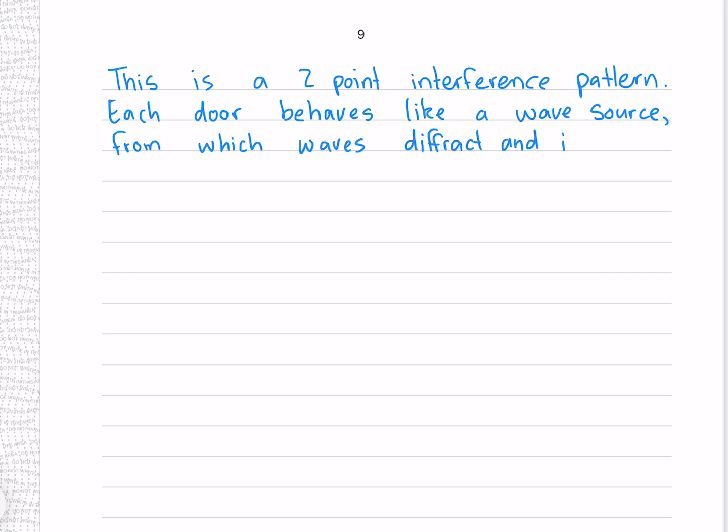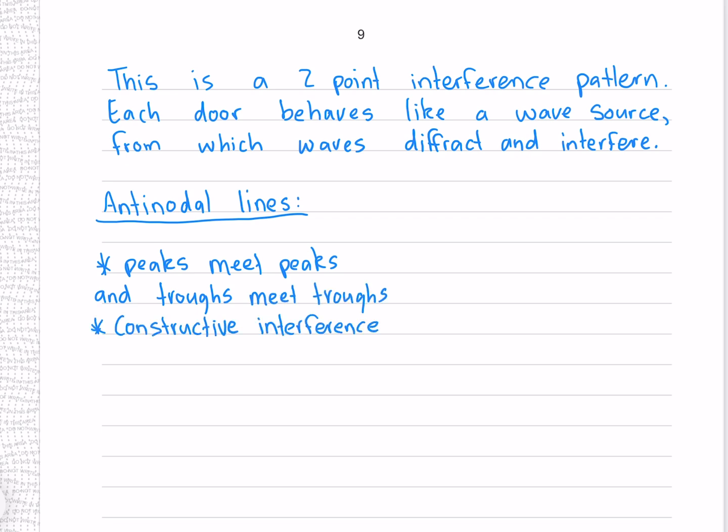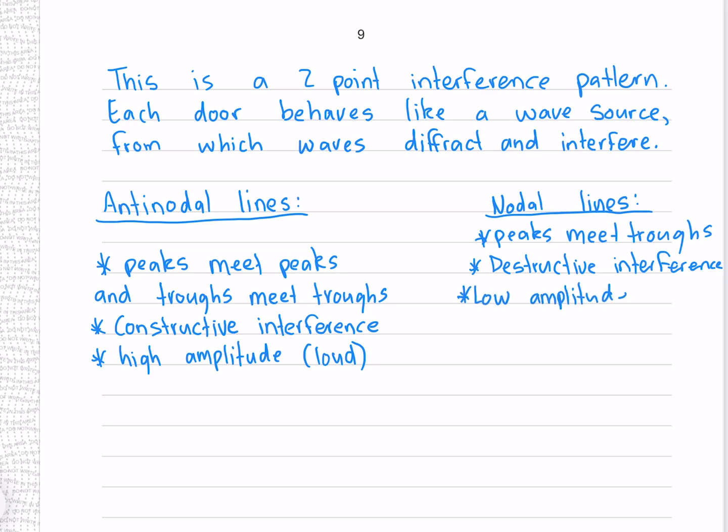And now it wants us to do an information dump. This is a two point interference pattern. Each door behaves like a wave source from which waves diffract and interfere. Along our antinodal lines, peaks meet peaks and troughs meet troughs, resulting in constructive interference and high amplitude, causing areas of loudness. Along our nodal lines, peaks meet troughs, resulting in destructive interference and areas of low amplitude or quietness.